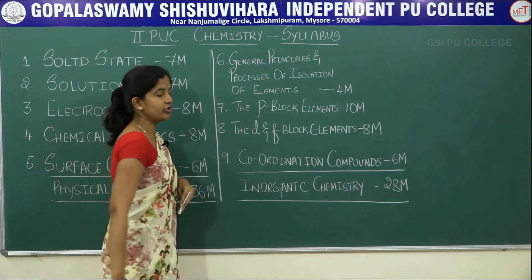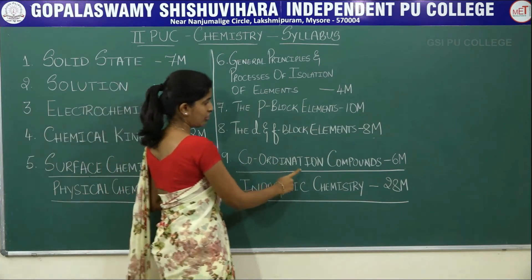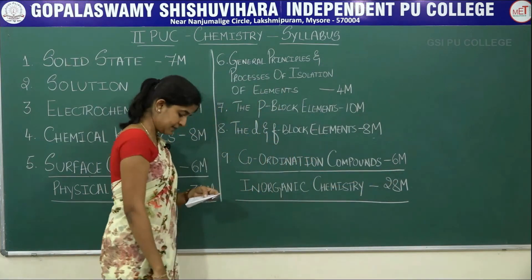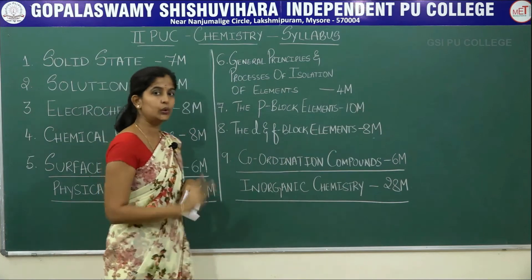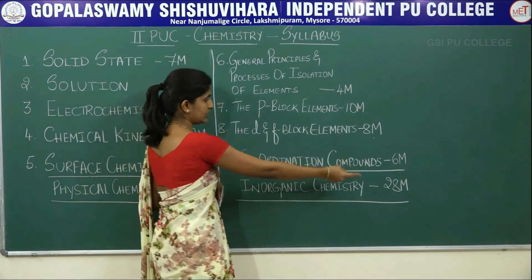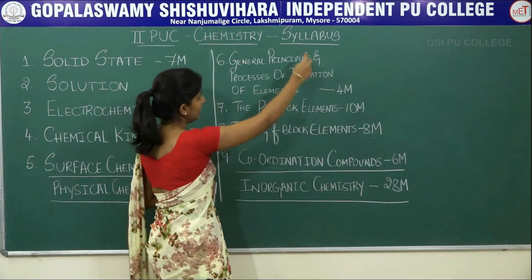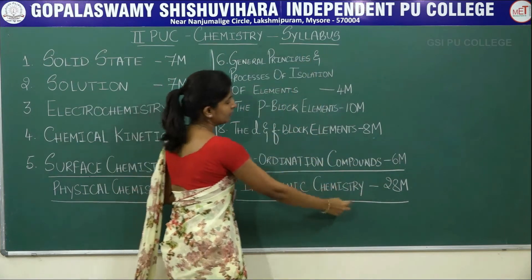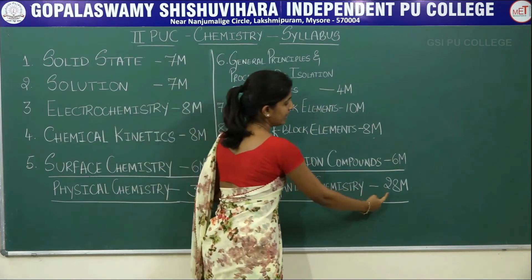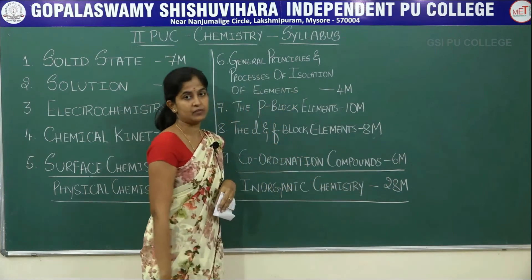The last chapter of the inorganic branch is coordination compounds. Its total weightage is 6 marks, divided into two 3-mark questions — that is 3 times 2 equals 6. The total branch weightage for inorganic chemistry is 28 marks.